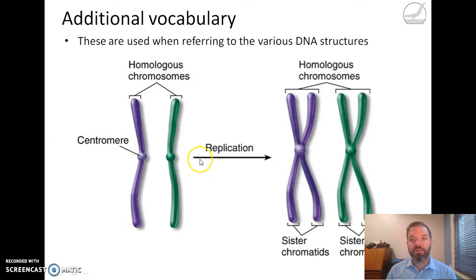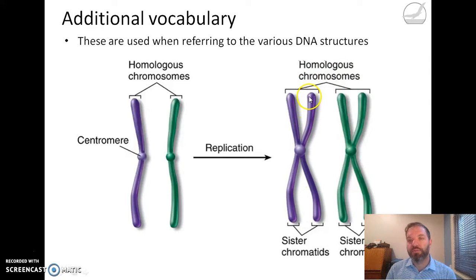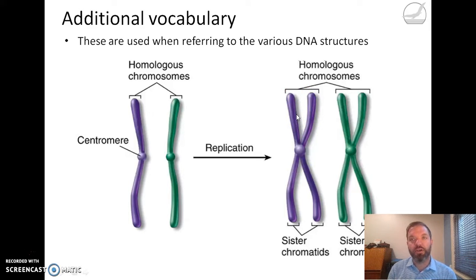After those homologous chromosomes have been copied, there are still only two homologous chromosomes, but each of those chromosomes is made of two sister chromatids. Sister chromatids have the same genes in the same sequence and also the same DNA sequence, because one has been copied from the other. So sister chromatids are copies, while homologous chromosomes are similar but distinct matching chromosomes.